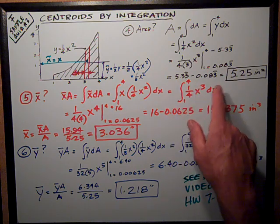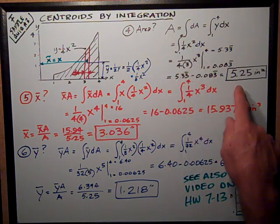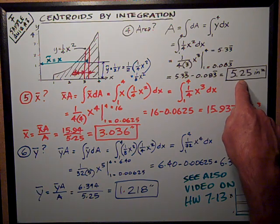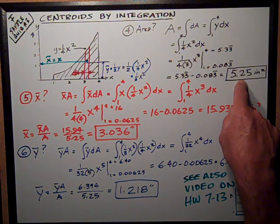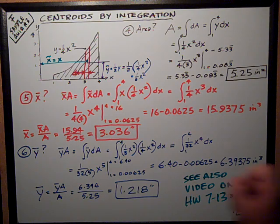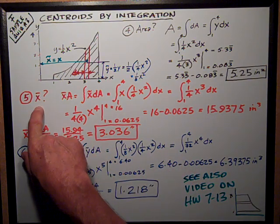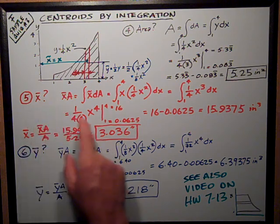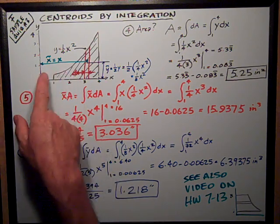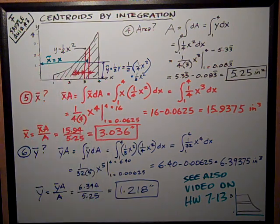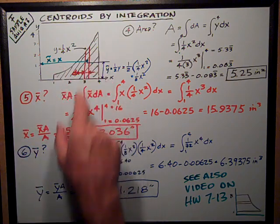Subtract those two and get the value of that integral from one to four, 5.25 square inches. That's the answer for number four on the sample quiz. Part five was to get the x-bar distance, the centroid about the y-axis of that area.